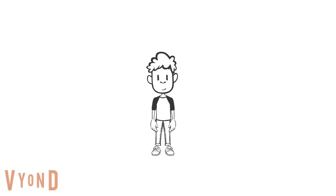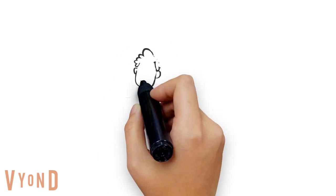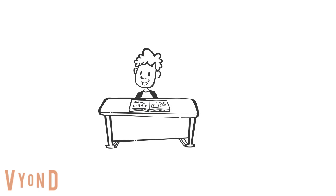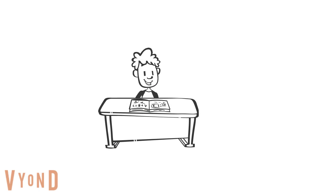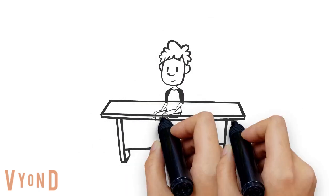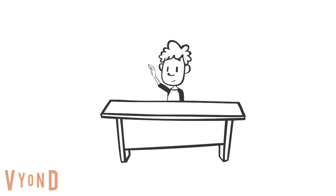Recall our out-of-seat behavior example: the incompatible behavior was sitting down. An alternative behavior might be that I want the student to raise their hand to get up from their desk.